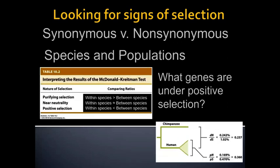We can also look for signs of selection within a species, not just between species. The Ka to Ks ratio tests between populations that are no longer interbreeding. But we can also use diversity levels within a species, possibly using an outgroup. If diversity within a species equals diversity between species, the gene is evolving neutrally. If diversity within a species is much greater than the difference between species, that's purifying selection. If the within-species difference is significantly less than the between-species difference, that shows strong positive selection — those genes have been driven to do something new and important.